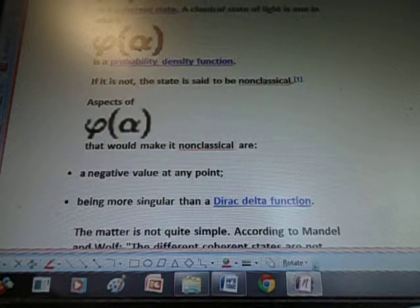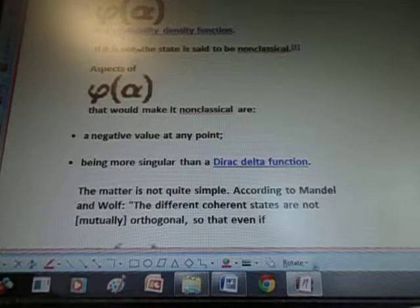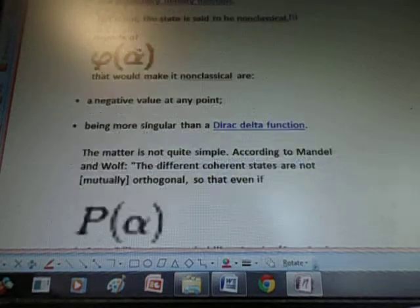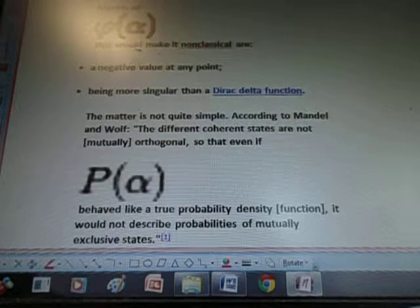Aspects that would make it non-classical are a negative value at any point, or being more singular than a Dirac delta function. The matter is not quite simple.